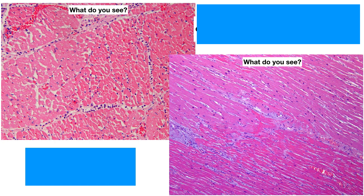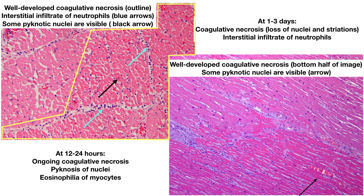On the top left, there is well-developed coagulative necrosis, outlined with the yellow arrow on the right side. There are still some visible faded pyknotic nuclei, and there is an interstitial infiltrate of neutrophils seen at the blue arrows. In the bottom right, you see well-developed coagulative necrosis in basically the bottom half of the image, with pronounced hyper-eosinophilia of the cardiac myocytes and essentially loss of nuclei, although some very faded ones remain. At 12 to 24 hours, you see ongoing coagulative necrosis, pyknosis of nuclei, and eosinophilia of myocytes. At 1 to 3 days, you see coagulative necrosis, loss of nuclei and striations, and interstitial infiltrate of neutrophils.